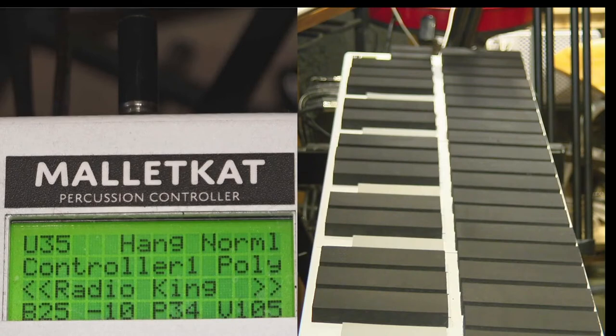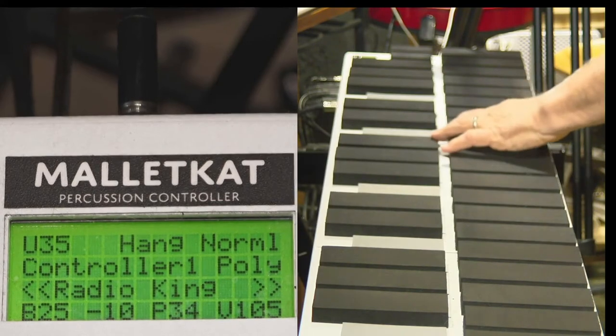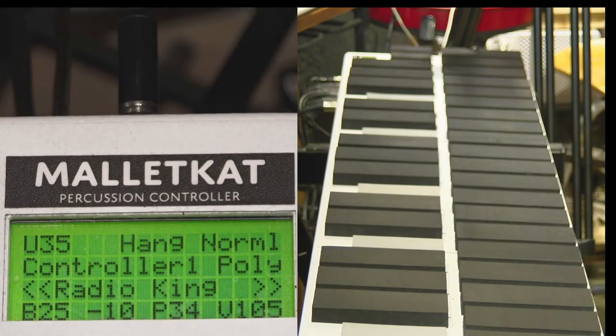FSR sensors use pressure to determine when you strike a pad. There's a threshold based on the weight of the pad, and you can change the threshold of each and every pad.